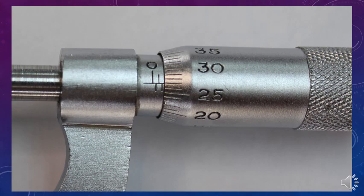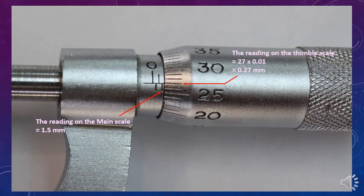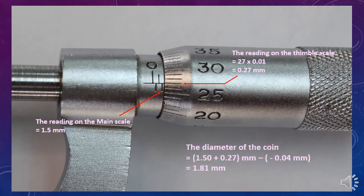Place the coin between the anvil and spindle. Turn the thimble until the anvil and spindle grip the coin, then turn the ratchet until it starts to click for careful tightening. Read the main scale reading at the edge of the thimble; in this case the reading on the main scale is 1.5 mm. Then read the thimble scale mark that coincides with the datum line of the main scale; in this case it is 0.27 mm. The actual reading of the diameter of the coin is the sum of the main scale reading and the thimble scale reading minus the negative zero error. Therefore, the diameter of the coin is 1.81 mm.